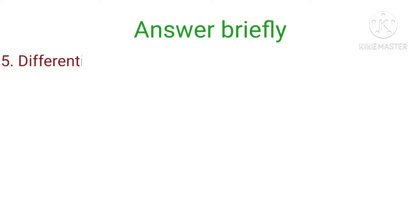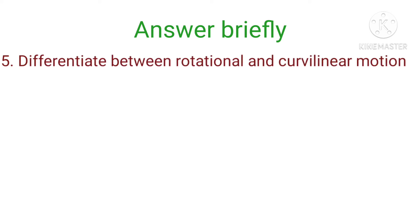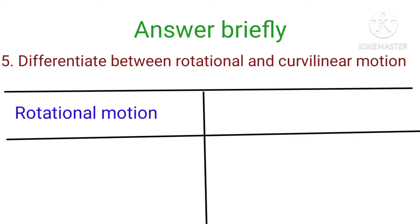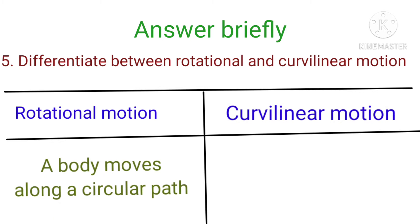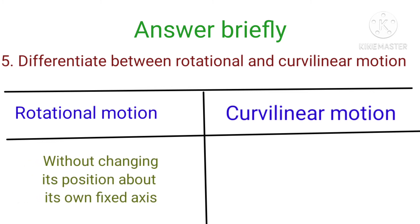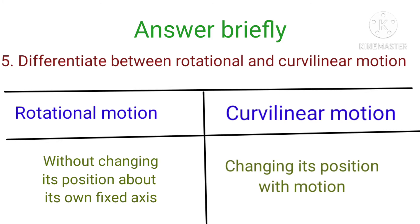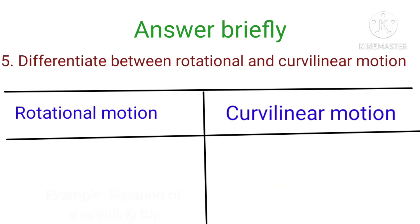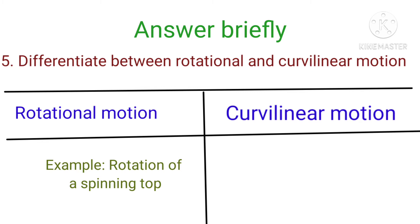Fifth question: differentiate between rotational and curvilinear motion. In rotational motion, your body moves along a circular path about its own fixed axis without changing its position. In curvilinear motion, your body moves along a curved path, changing its position with motion. Example of rotational motion: rotation of a spinning top. Example of curvilinear motion: throwing paper airplanes.